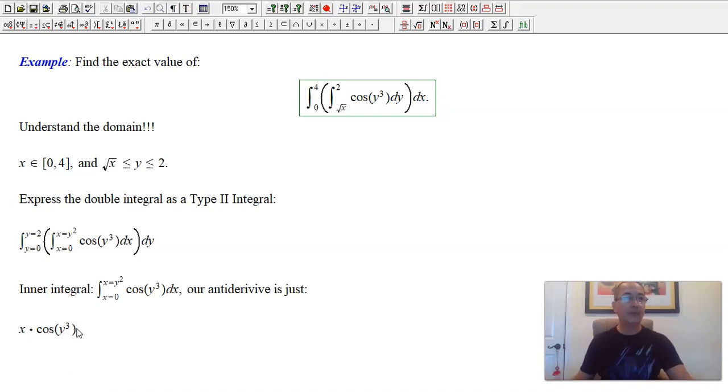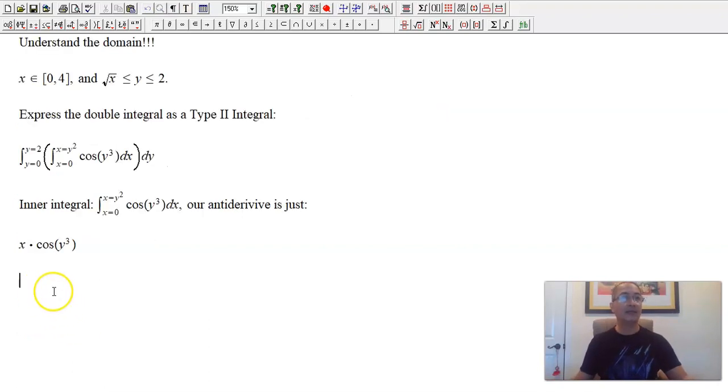Since y equals square root of x, x must be y squared. The function does not change. So we still have cosine y cubed as our integrand. So does this solve the problem? Does it make it any better? It's the same function, but this time we have dx as our differential. So remember, because dx is our differential, y is a constant. So for the inner integral, our antiderivative is just x times cosine of y cubed. That's our antiderivative, because the whole of cosine y cubed, whatever it is, it's just a constant. Our variable is x.